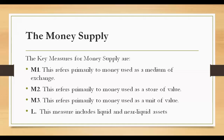M3 refers primarily to money used as a unit of value. In addition to M2, M3 includes financial institutions such as large denomination time deposits and term Eurodollars. Beyond M3, the measure L includes liquid and near-liquid assets, such as short-term treasury notes, high-grade commercial paper, and bank acceptance notes.